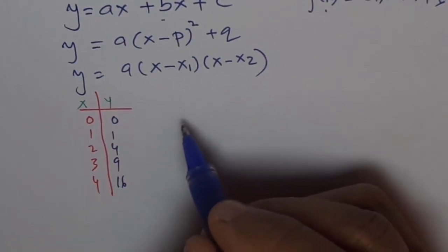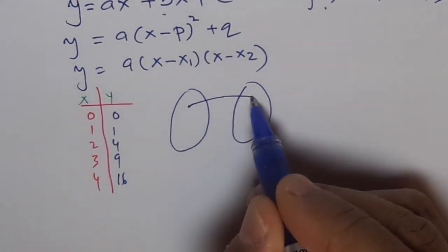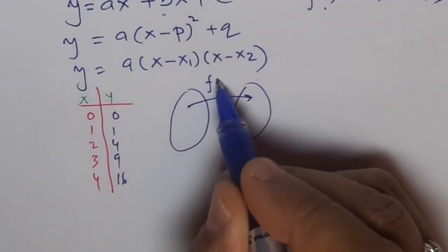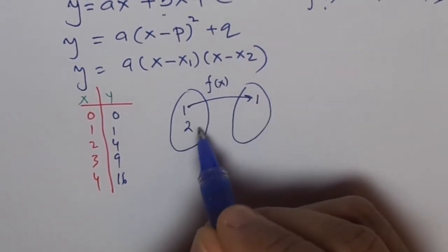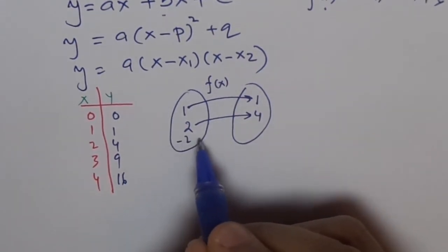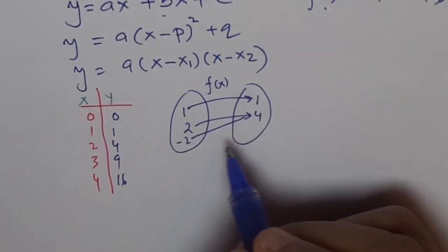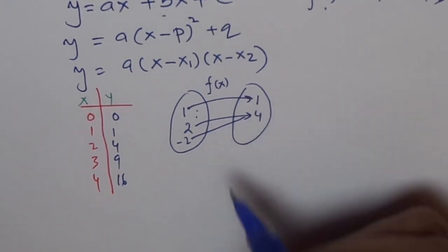I can represent this function in the form of mapping diagrams. I hope you remember that too. So we say this is my function f(x) where 1 is mapped to 1 and 2 is mapped to 4. Minus 2 is mapped to 4. Like this we can go on and represent a function as a mapping diagram.